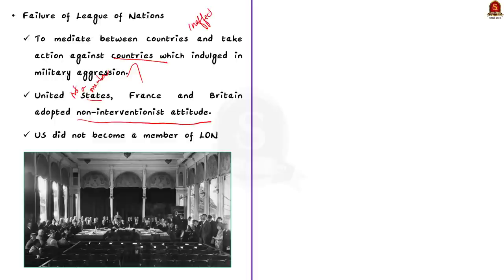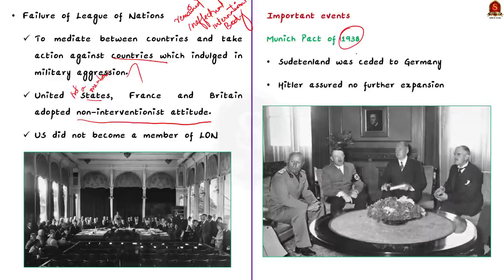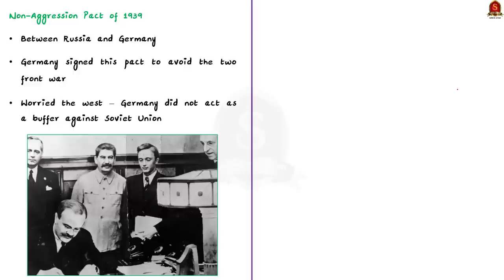These are some of the important causes of World War II. Now let us see some of the important events that happened during the war. The Munich Pact of 1938 was the culmination of the appeasement policy. As part of this pact, the Sudetenland was ceded to Germany without Czechoslovakia's consent, and Hitler gave assurance of no further expansion. The next important pact was signed in 1939 — a non-aggression pact between Germany and the Soviet Union, signed secretly.